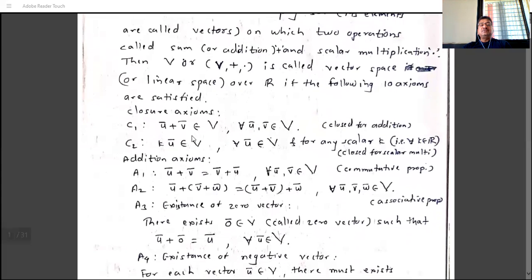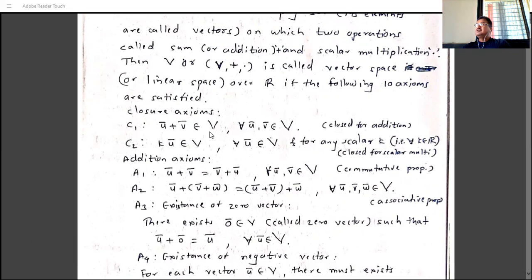The first closure axiom (C1): U + V belongs to V for all U and V belonging to V. That is, V is closed under addition. The meaning is that the addition of every two elements of V belongs to V. If this holds, we say the first property is satisfied.